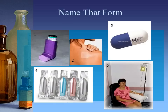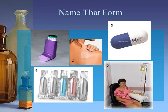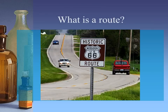I challenge you — maybe later today or tomorrow — to take a look in your own medicine cabinet and see how many different forms of medications you can name that you actually have in your house. The second part of this section deals with routes, and what exactly is a route. A route is a way of getting from one place to another. When we talk about a medication route, we mean how a medication actually gets into the body — what pathway it takes.